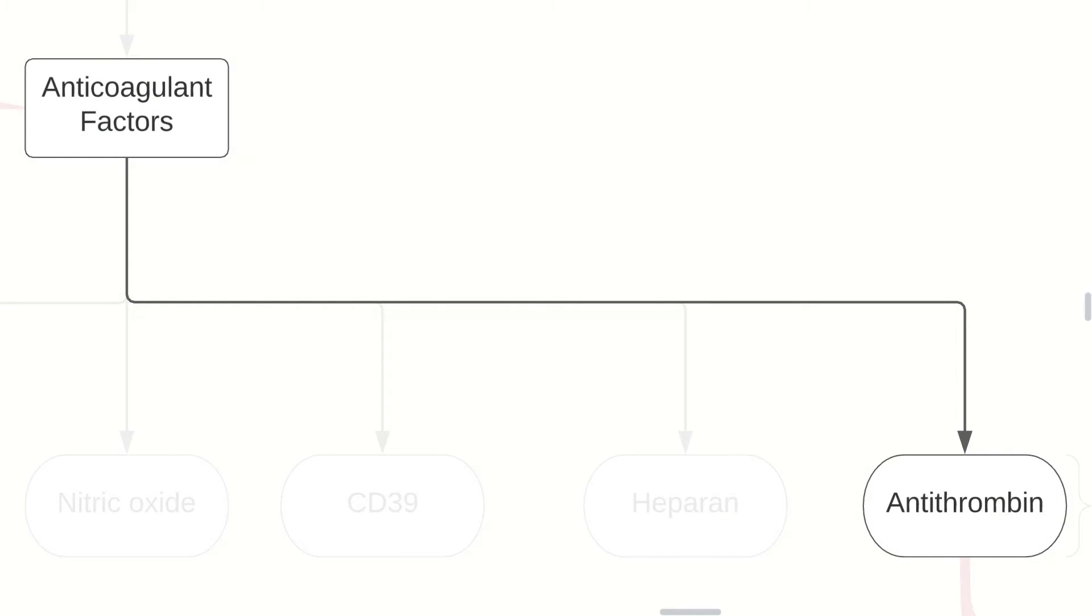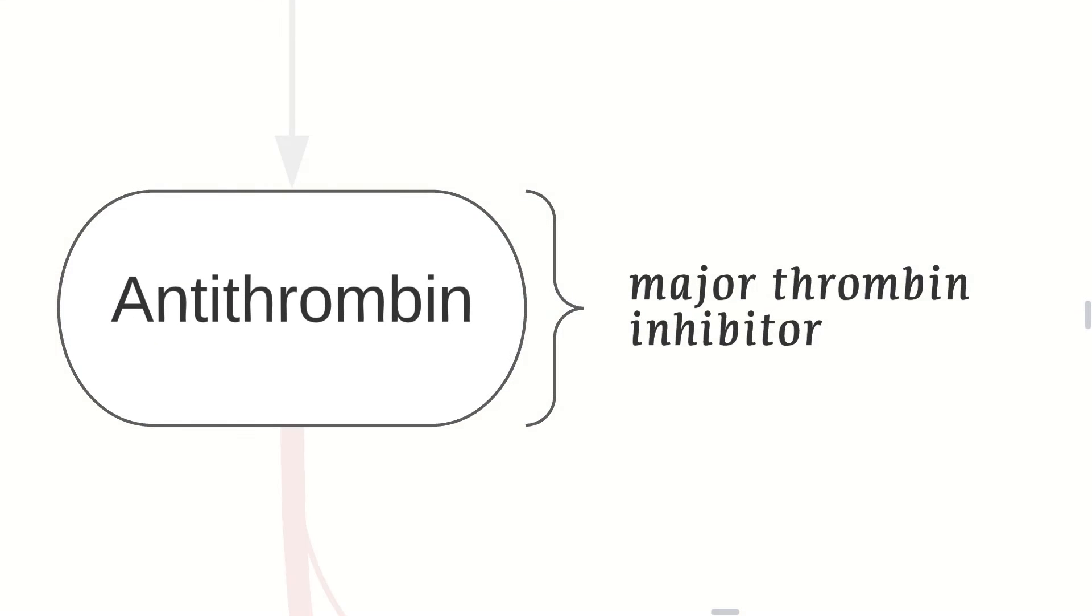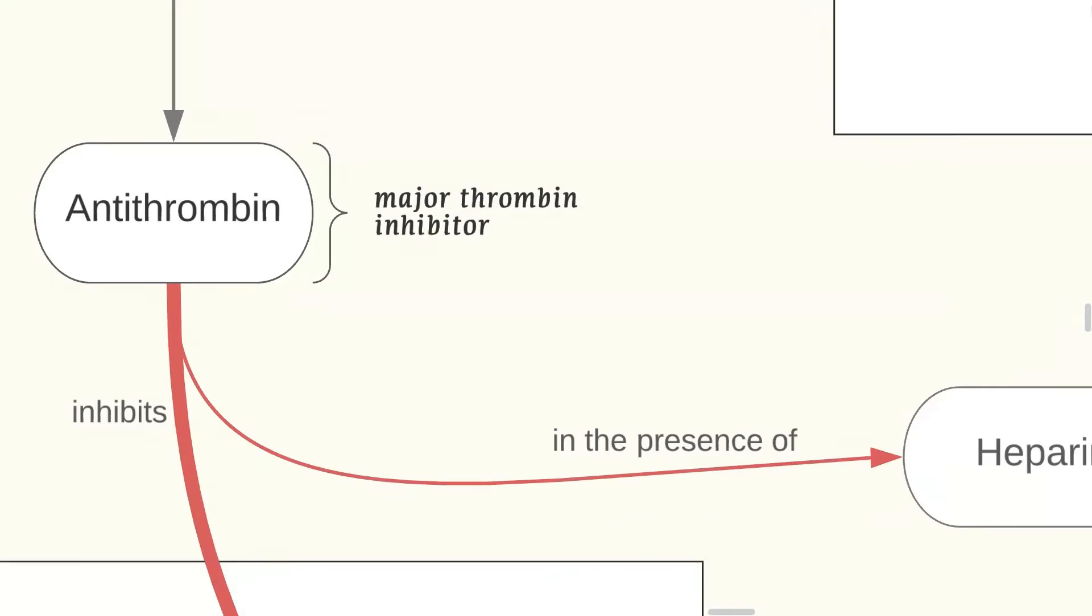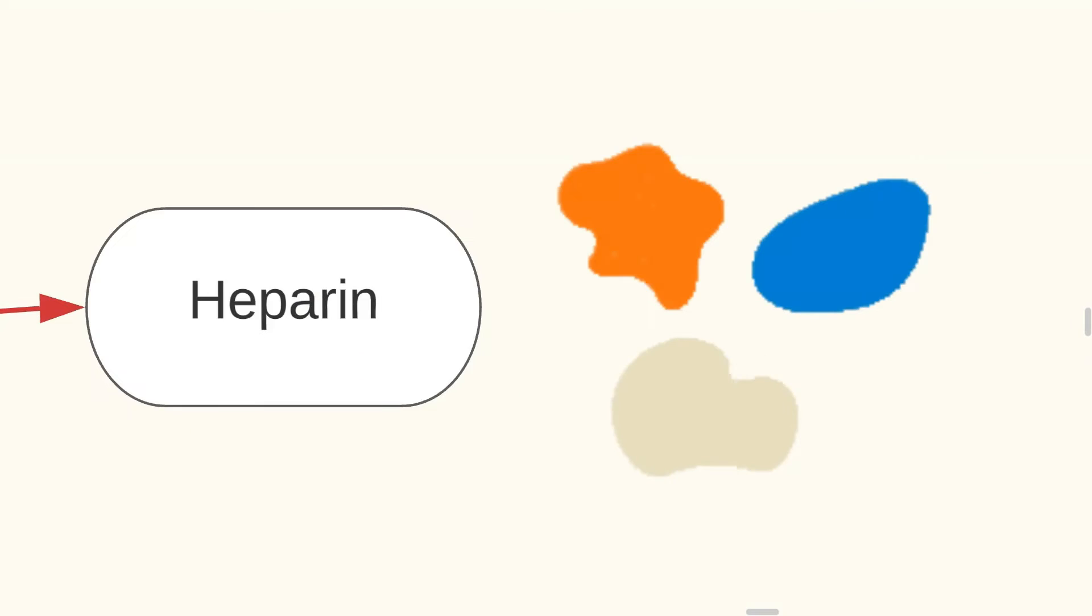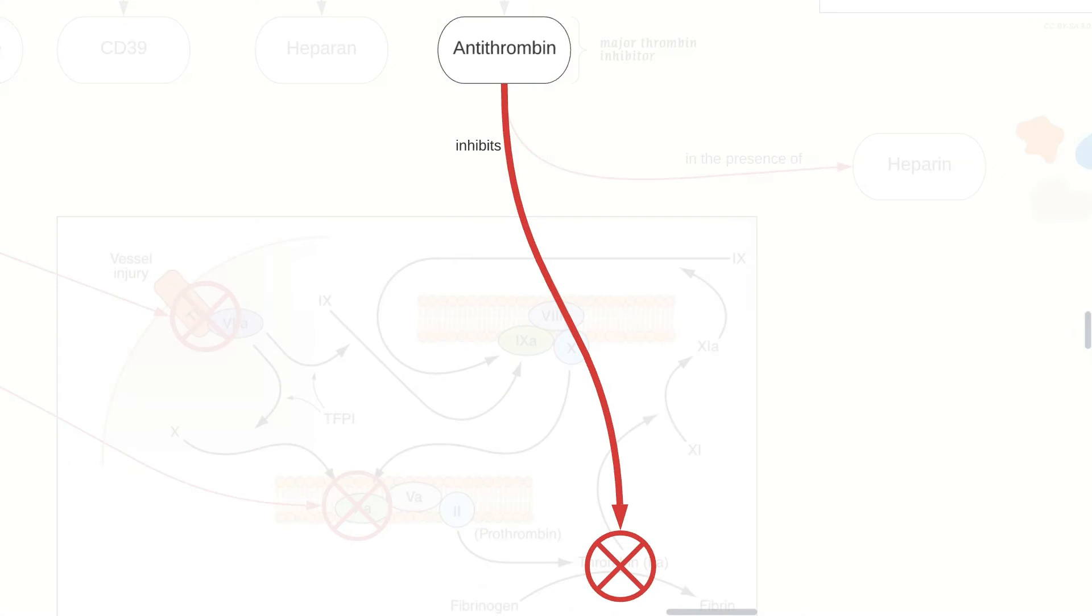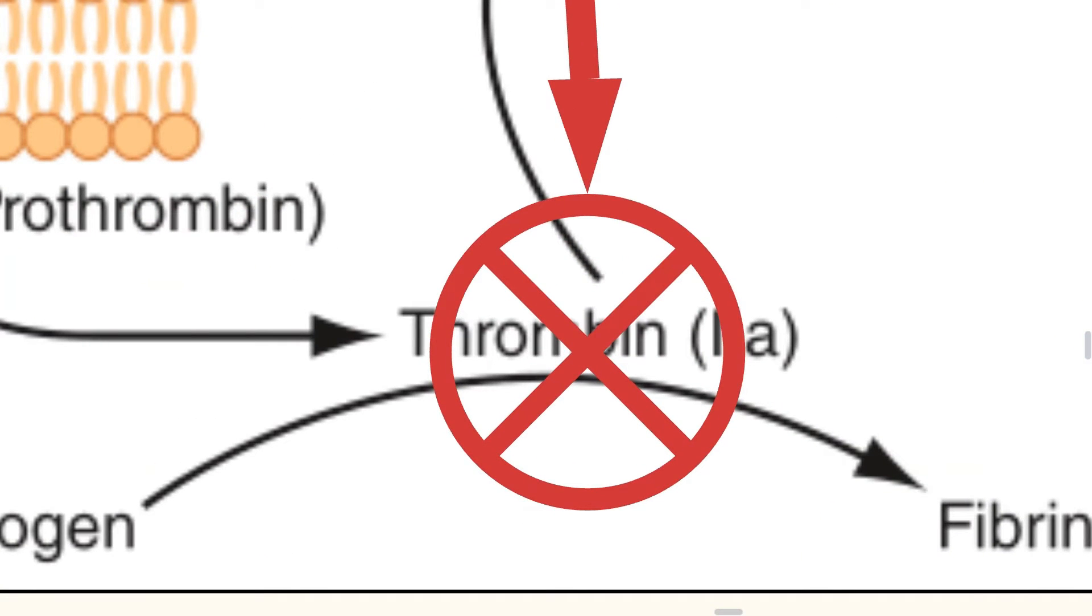Talking about anticoagulant factors, antithrombin is the major thrombin inhibitor, and in the presence of heparin, the rate of formation of these inactivating complexes increased by a factor of several thousand. Antithrombin also obviously inhibits thrombin.